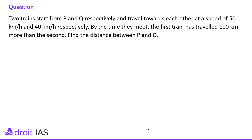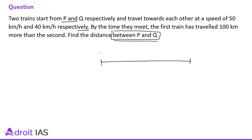Question 5: Two trains start from P and Q respectively and travel towards each other at speeds of 50 km per hour and 40 km per hour. By the time they meet, the first train has travelled 100 km more than the second train. Find the distance between P and Q. One train starts from P towards Q at 50 km per hour, and another starts from Q towards P at 40 km per hour.